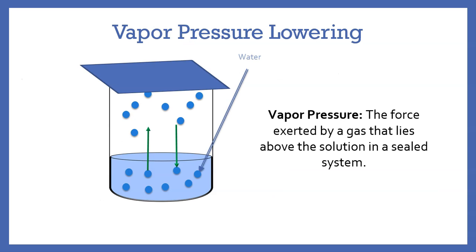Now let's talk about vapor pressure lowering. Vapor pressure is a force exerted by a gas that lies above the solution in a sealed system. When we talk about a sealed system, it means my beaker has a lid on it, so those particles are not getting out of the beaker.